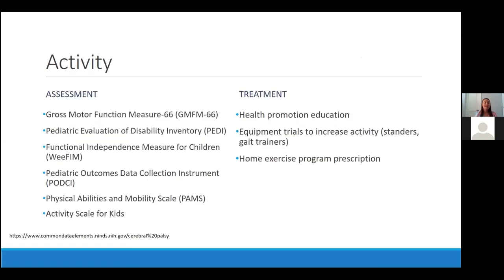For activity assessment, there are a ton of outcome measures — the most common ones I use in my clinic include the Gross Motor Function Measure 66 and the Pediatric Outcomes Data Collection Instrument, among many others. Treatment includes health promotion education and equipment trials to increase activities — specifically in my clinic we try out a lot of standers and gait trainers. Anything we can do to get patients active and moving in their home and community environments, rather than physical therapy being the only place they move, along with home exercise program prescription.